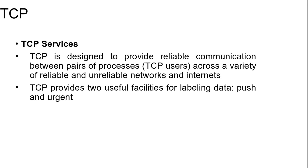First, data stream push. TCP decides when sufficient data have accumulated to form a segment for transmission. The TCP user can require TCP to transmit all outstanding data up to and including data labelled with a push flag. On the receiving end, TCP will deliver this data to the user in the same manner. A user might request this if it has come to a logical break in the data. Second, urgent data signaling. This provides a means of informing the destination TCP user that significant or urgent data is in the upcoming data stream. It is up to the destination user to determine appropriate action.